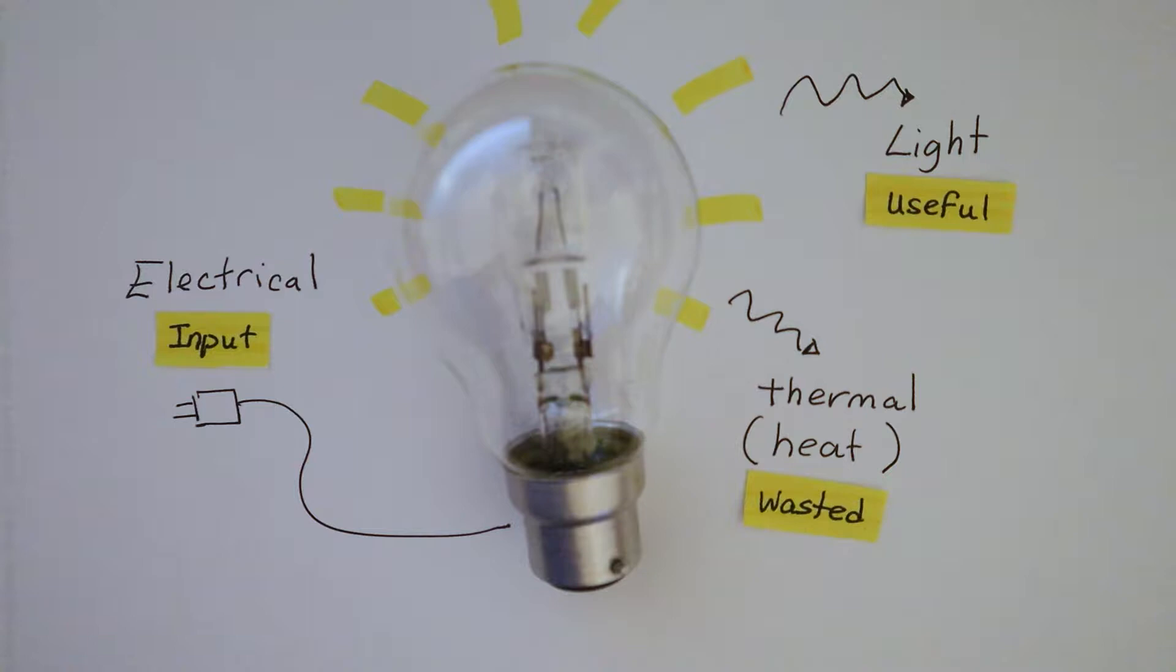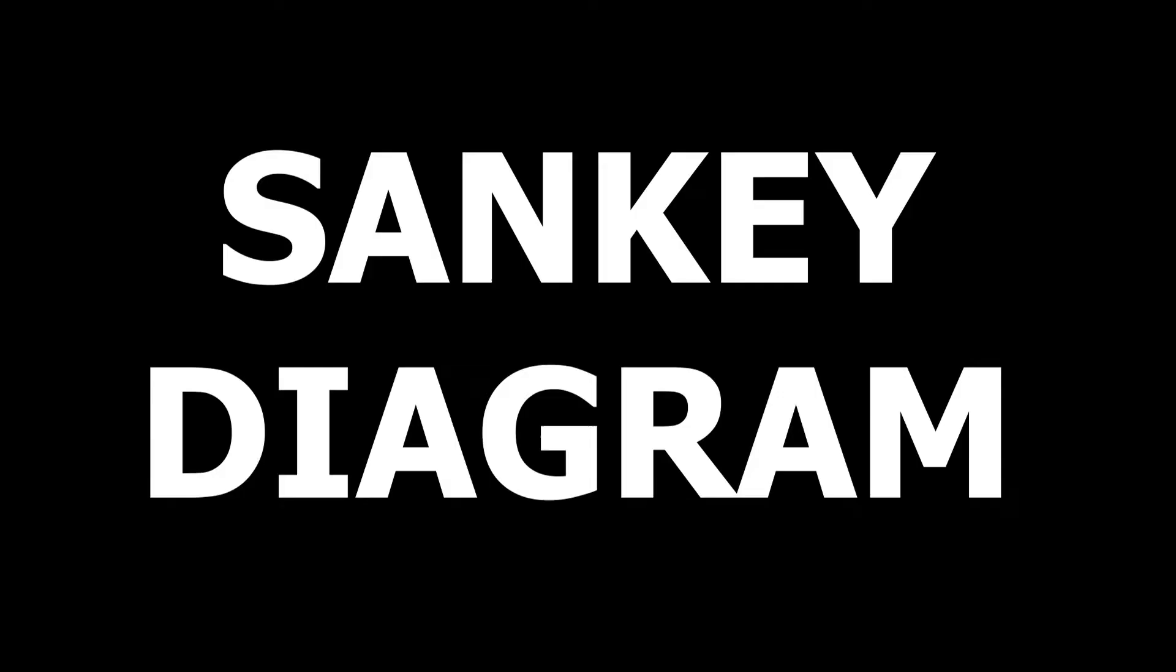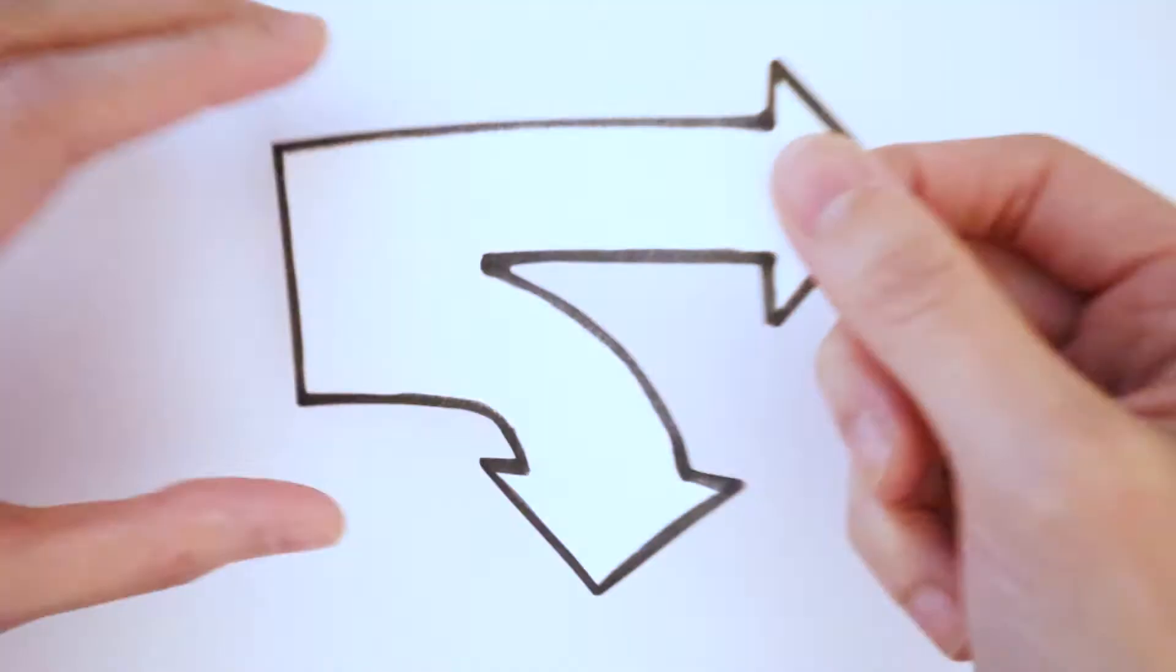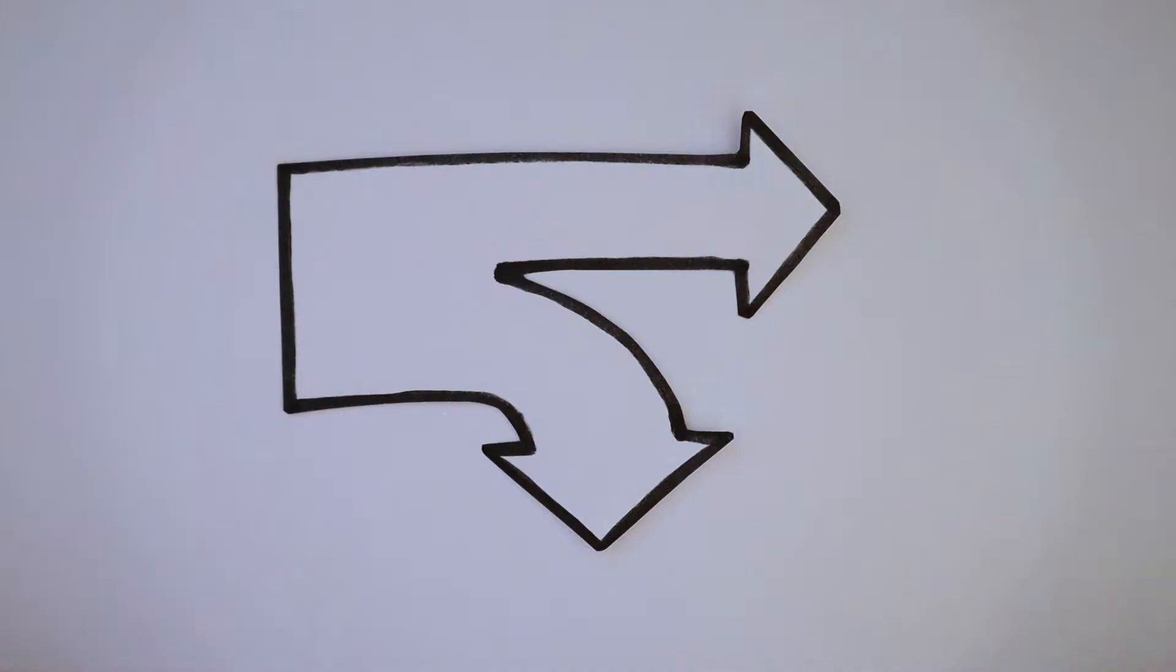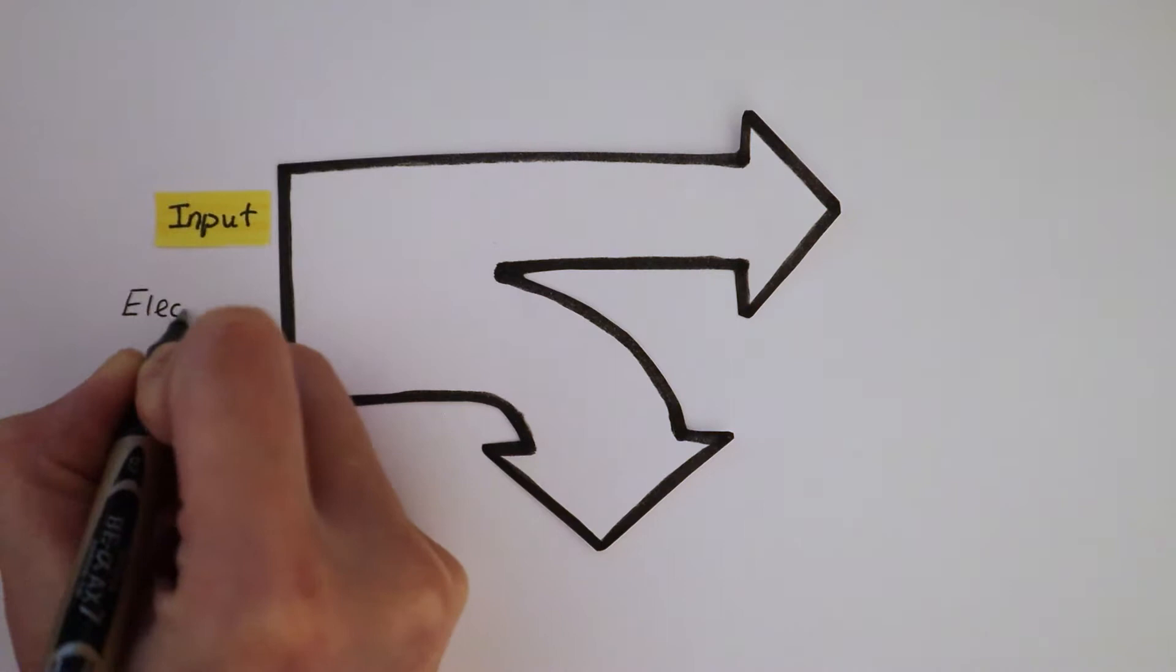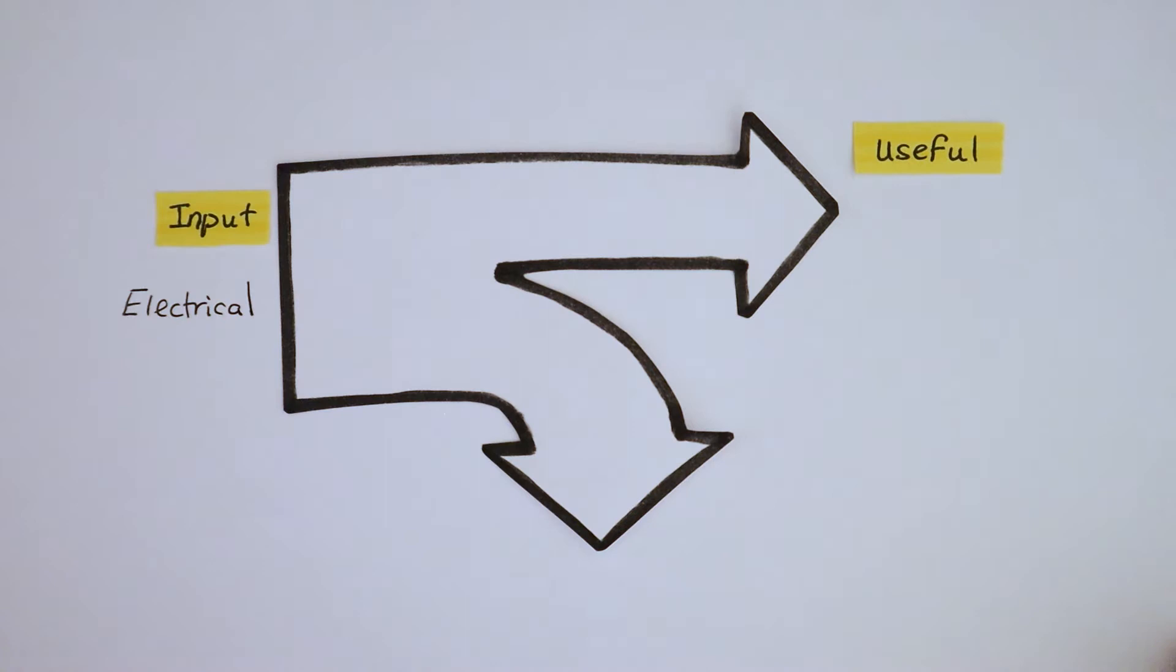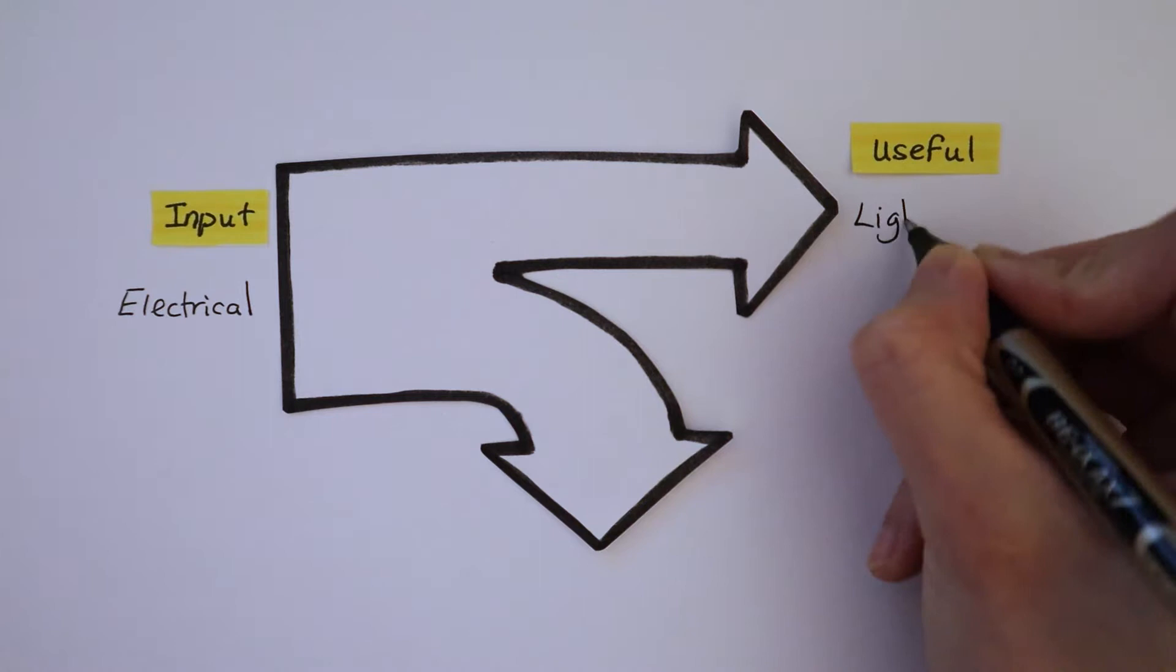We can represent this whole idea using what's called a Sankey diagram. The beginning of the Sankey diagram is the input energy. Using our light bulb example again, the input energy is the electrical energy. We usually use the top arrow to represent the useful output energy. That's light for a light bulb. Then we have the wasted output energy, which is thermal energy.